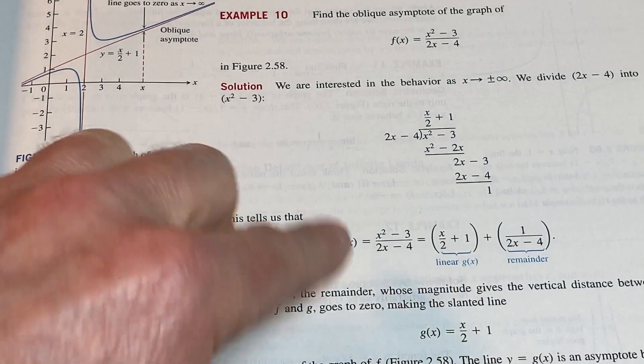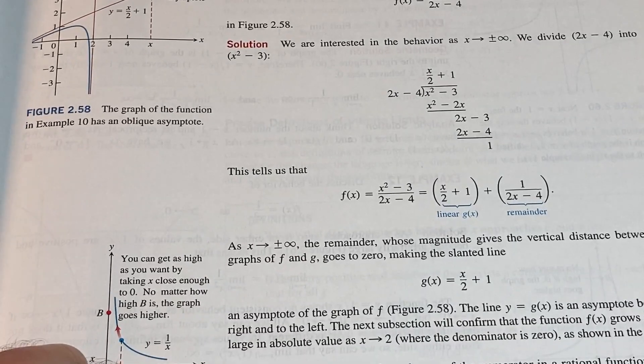The degree is the biggest exponent. So here's two and here's one. So whenever that happens, you can use long division and find the oblique asymptote. And you can see here, it even explains it.